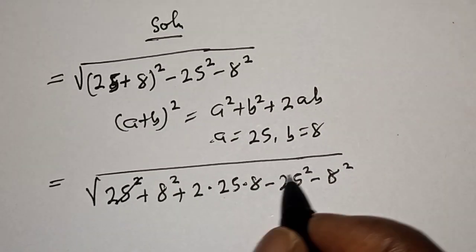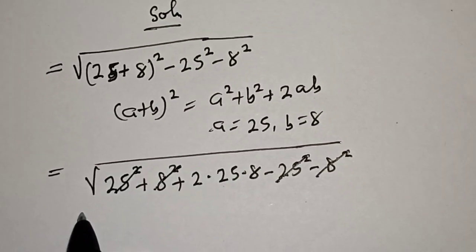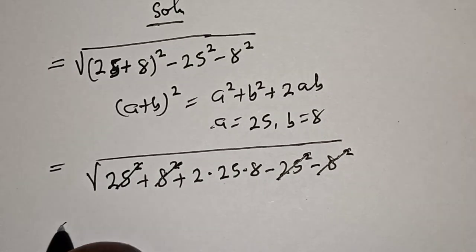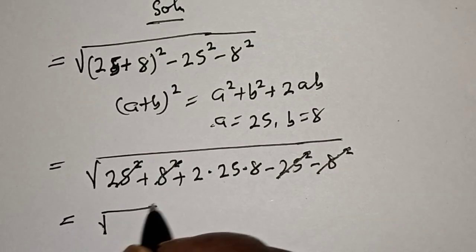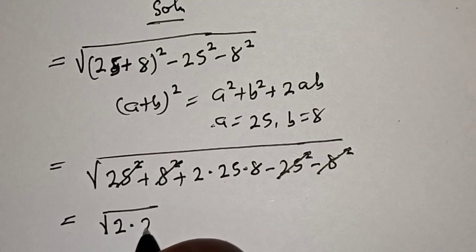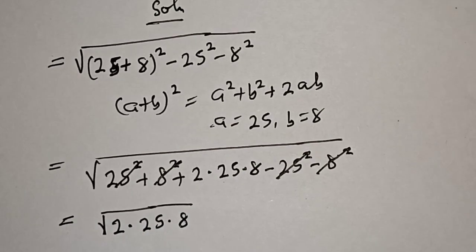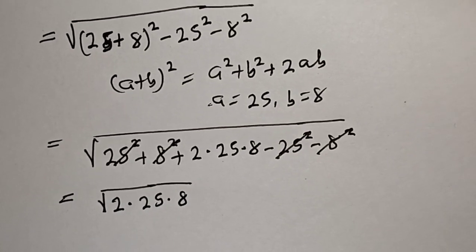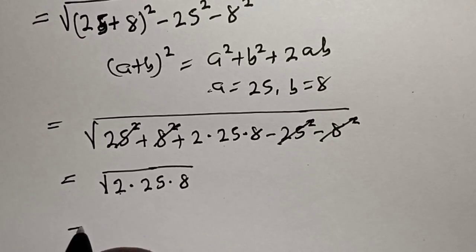Now the 25 squared terms cancel each other, and the 8 squared terms cancel each other. This is equal to square root of 2 multiplied by 25 multiplied by 8. And 2 times 8 is 16, so this equals square root of 16 multiplied by 25.